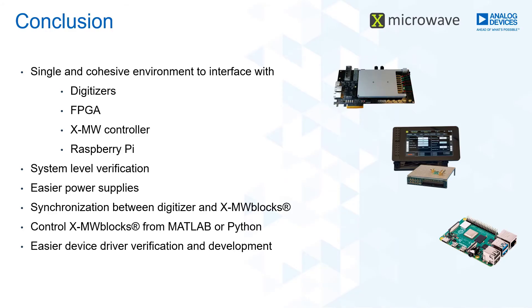To sum everything up, there will be available a common control path for the X-Microwave modules — either from the FPGA, X-Microwave controller, or even a Raspberry Pi. This way, the same setup built on the protoplate can be evaluated with different tools, and the user will be able to do reproducible tests since the only thing changing is the control unit. For more information, you can visit analog.com.